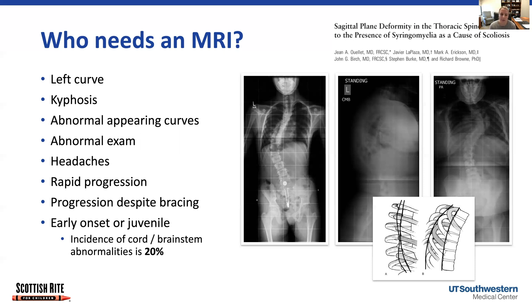The reason we get the MRI is to look for a Chiari malformation, a syrinx in the spinal cord, a tumor, tethered cord — there's a variety of things that we sometimes find when we look for them.